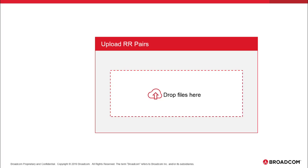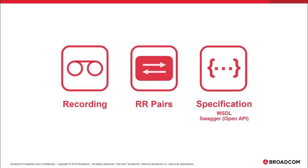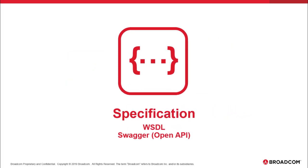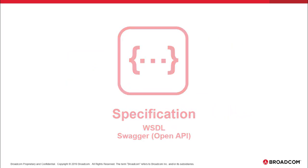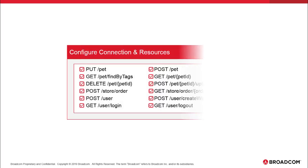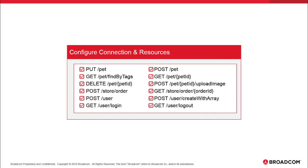But maybe you don't have those files either. Another option is to create a virtual service by importing specification files, like a Swagger, OpenAPI, or WSDL spec. You can import the specification from your file system or directly from a URL. And once you have the specification in DevTest, you can then select the specific operations that you want to virtualize — you don't have to virtualize every operation in the spec.